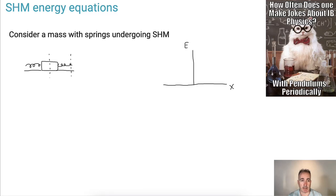So in this video we'll be investigating what happens with simple harmonic motion when we talk about energy. Let's go back to the basics here. We're going to consider ourselves a mass with springs on a frictionless surface. We're going to assume it's going to be going back and forth, undergoing simple harmonic motion.